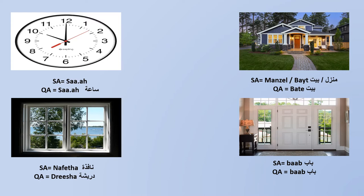Watch or clock is the same thing in Arabic and in Qatari dialect. In standard Arabic we say 'saa,' and in Qatari dialect it's also 'saa.' House: in standard Arabic we say 'menzel' or 'bait,' but in Qatari dialect we say 'bait.' Window: in Qatari dialect we say 'drisha,' while in standard Arabic we say 'nafida.' Door in both standard Arabic and Qatari dialect is the same — 'bab.'